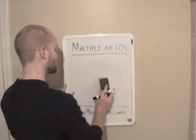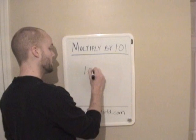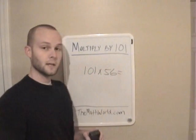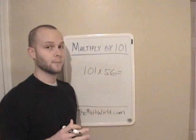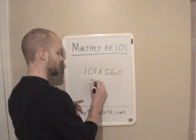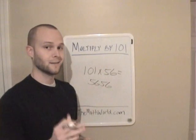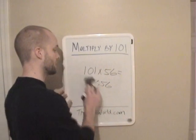We'll do 101 times 56. And if you guessed already, 101 times 56 is 56, 56, or 5,656. It's that simple.